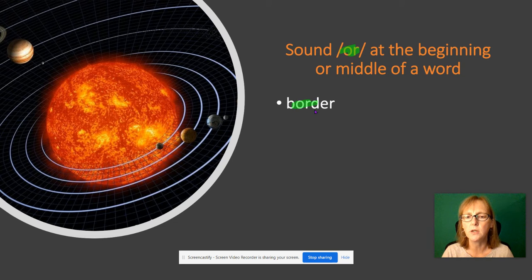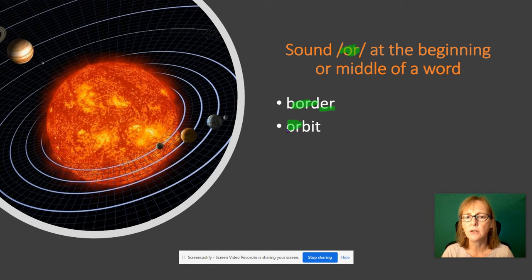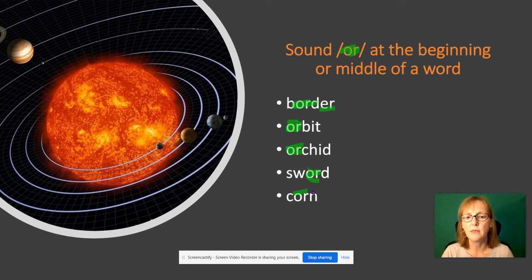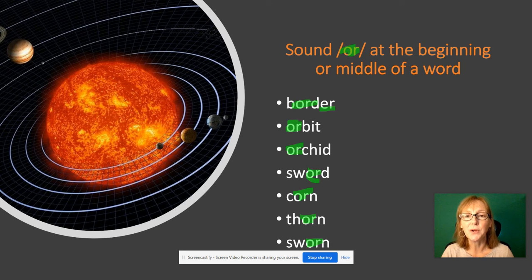In 'border', here's our O-R in the middle of the word. In 'orbit', the O-R is at the beginning. 'Orchid' — the beautiful flower — also has O-R at the beginning. In 'sword' the O-R is in the middle of the word, as it is in 'corn'. Then 'thorn' and 'sworn' also have the O-R sound in the middle.